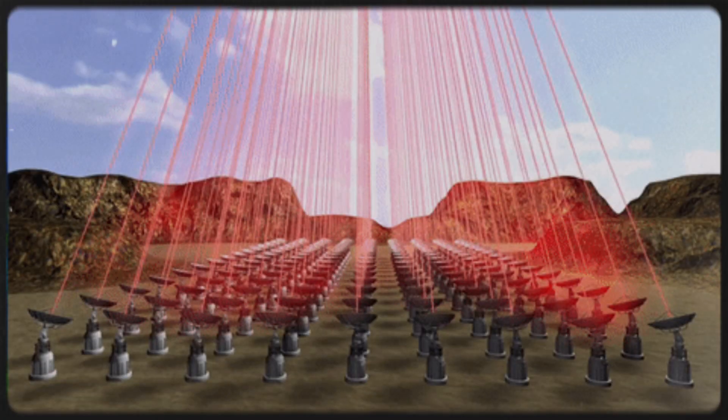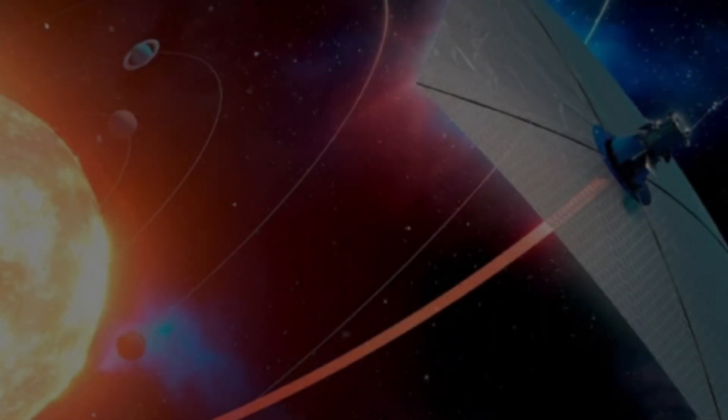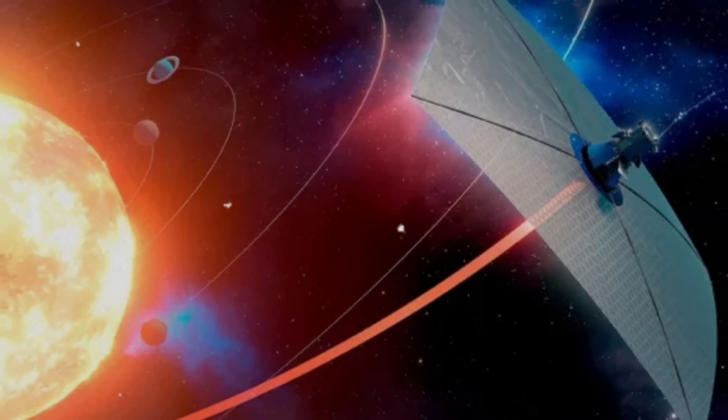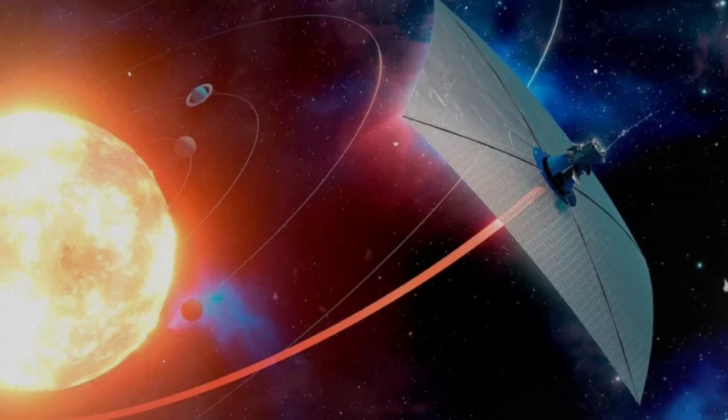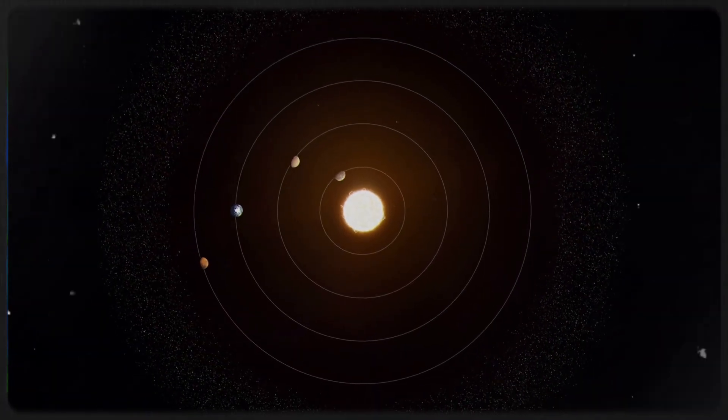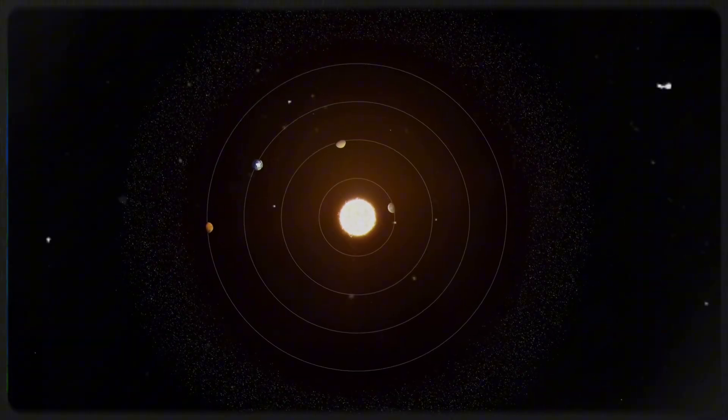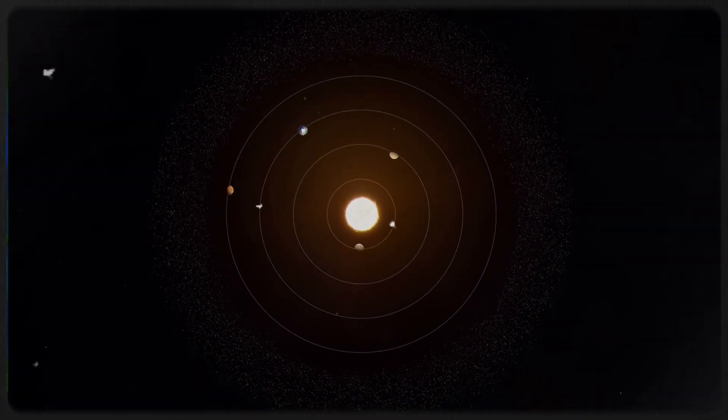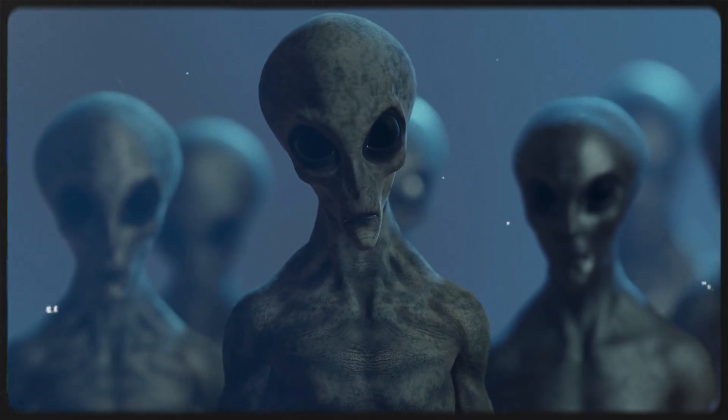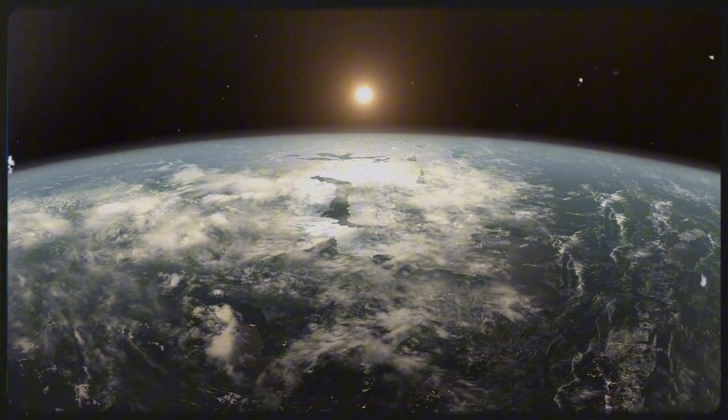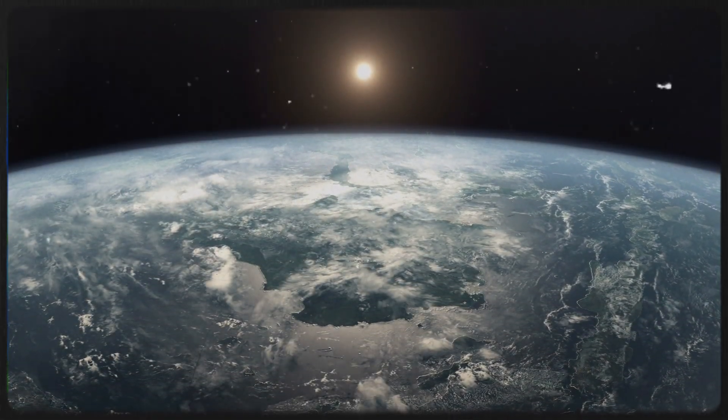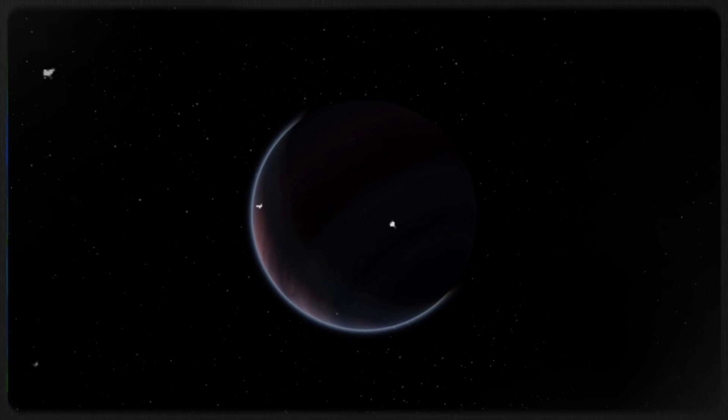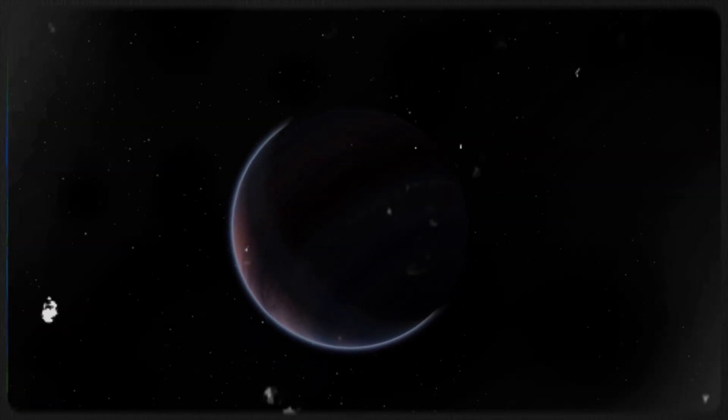If successful, Breakthrough Starshot could revolutionize space exploration. The tiny probes would be equipped with cameras and scientific instruments, transmitting data back to Earth about the Proxima Centauri system and its potentially habitable exoplanet, Proxima b. Such a mission could provide humanity with its first close-up look at another planetary system, answering fundamental questions about the nature of distant worlds and the possibility of extraterrestrial life.